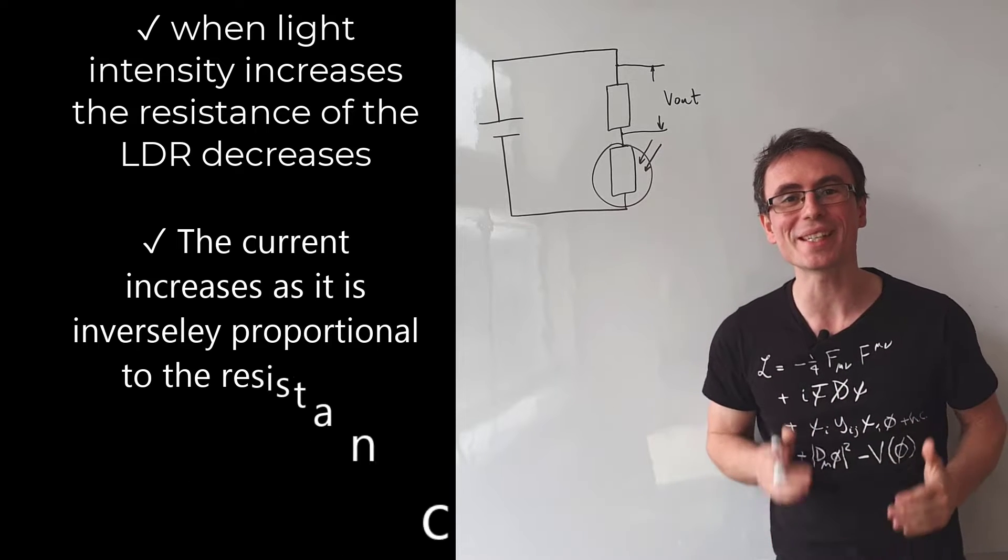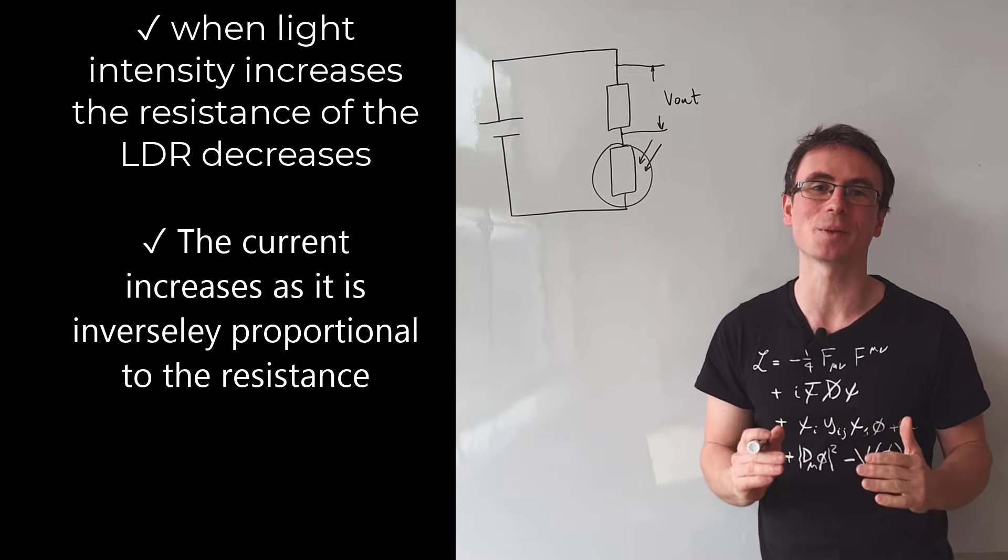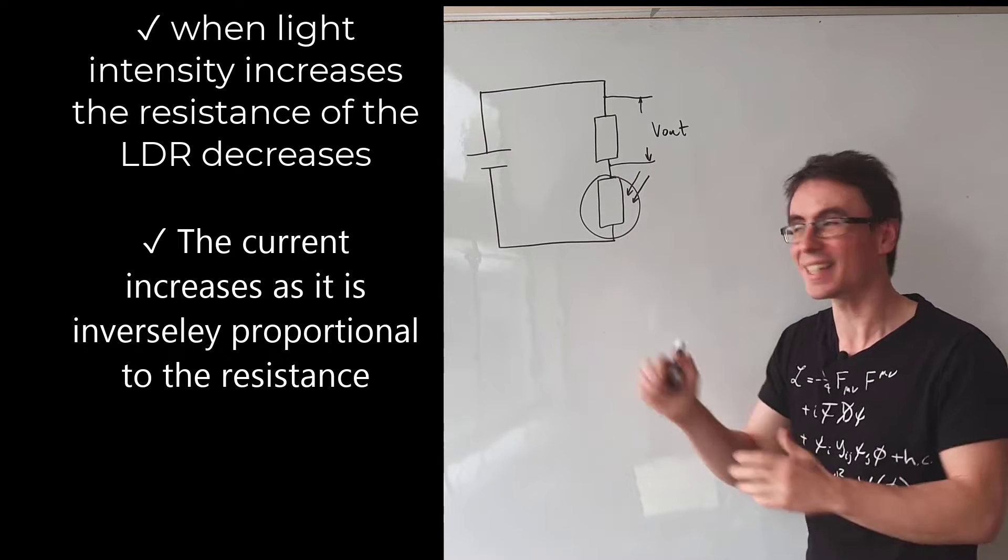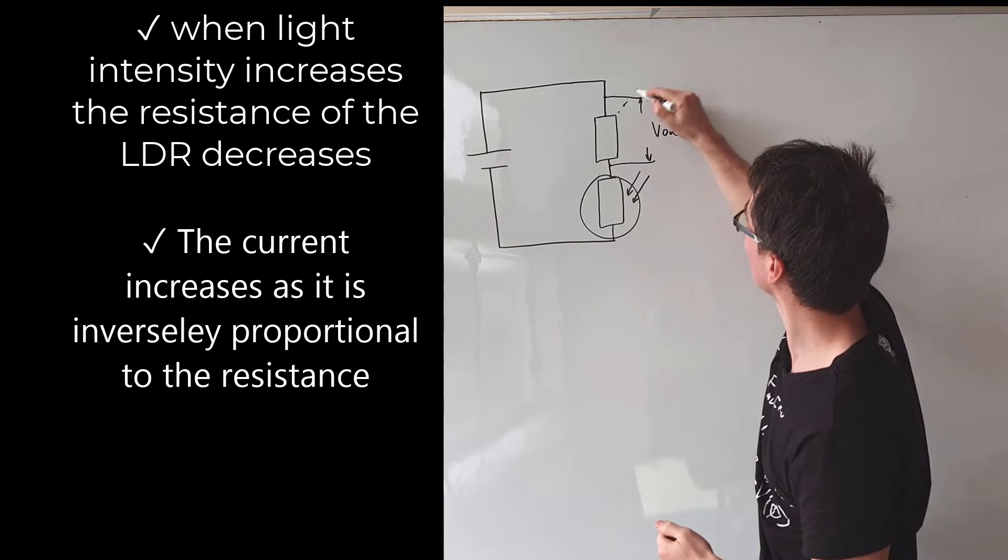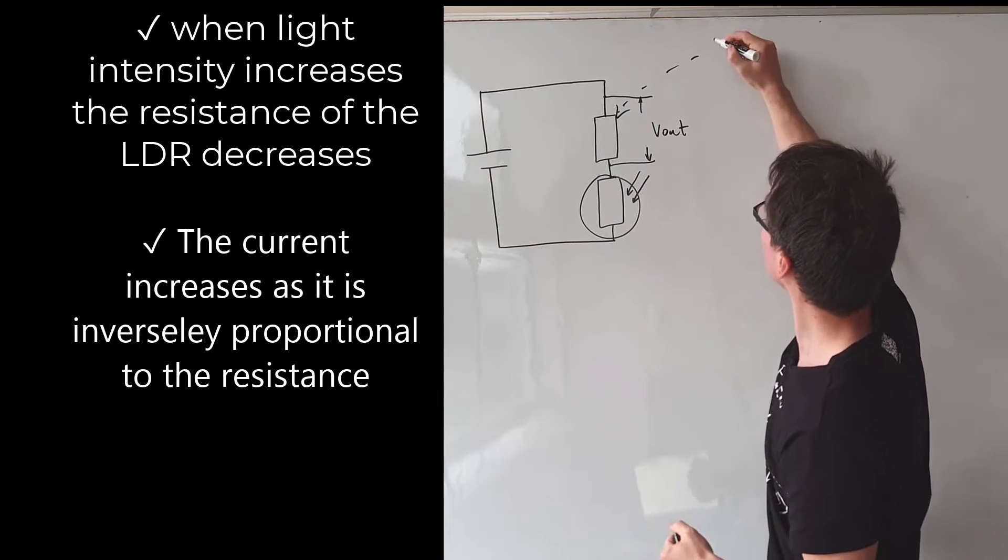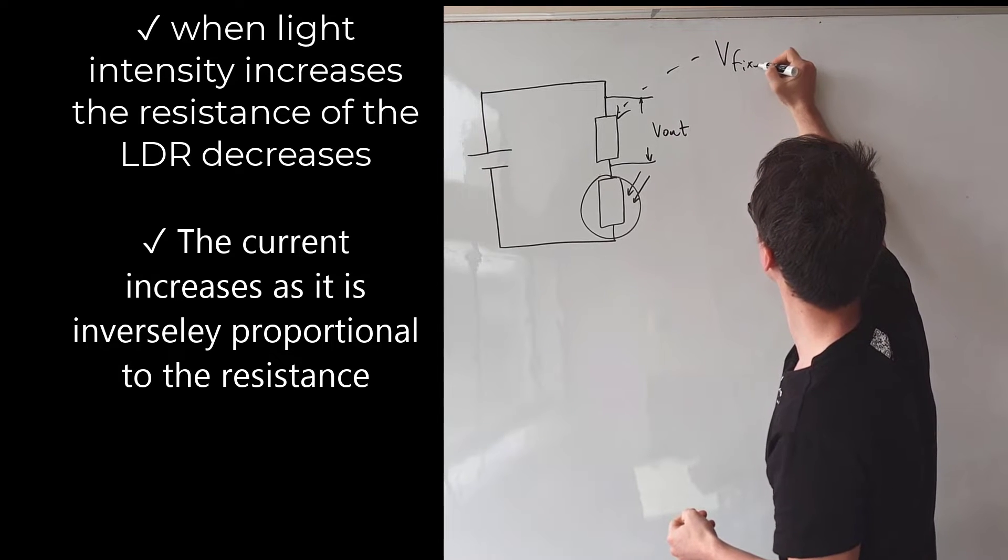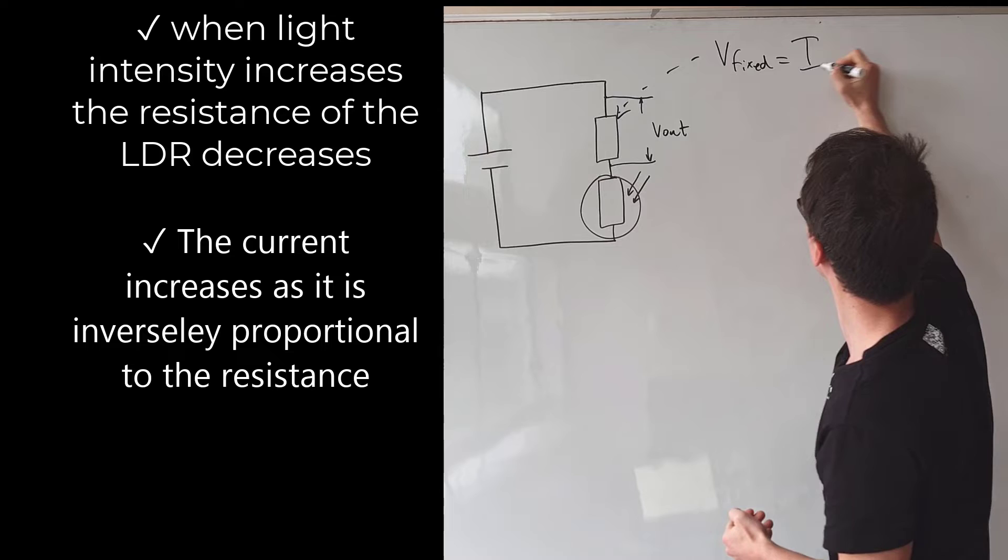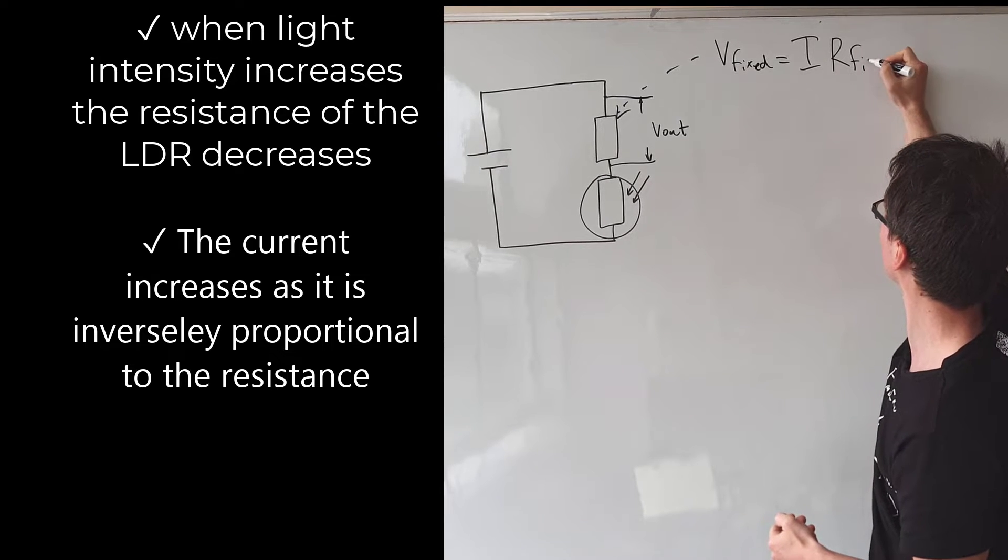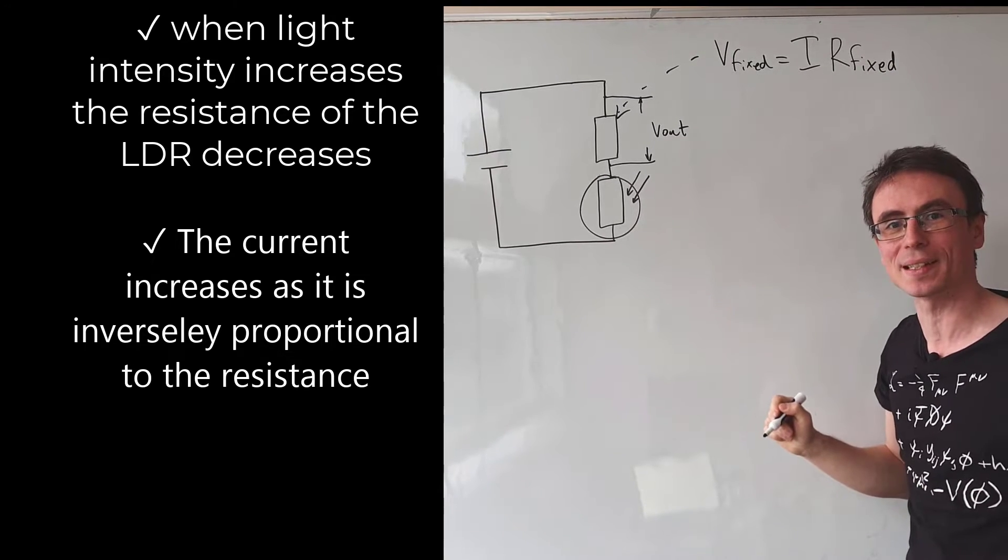Because the resistance decreases, the current in the circuit increases. If the current is higher, we need to focus on the fixed resistor. The potential difference across it, let's call it V_fixed, will be equal to the current multiplied by the fixed resistance.